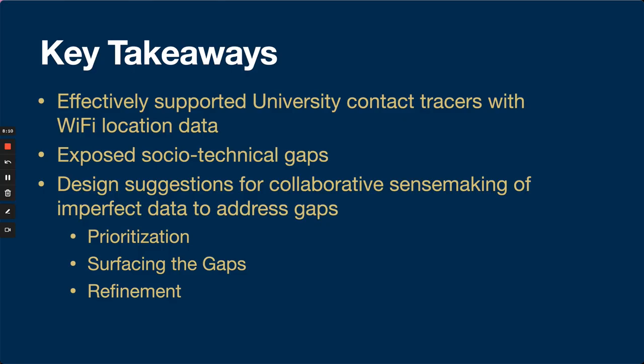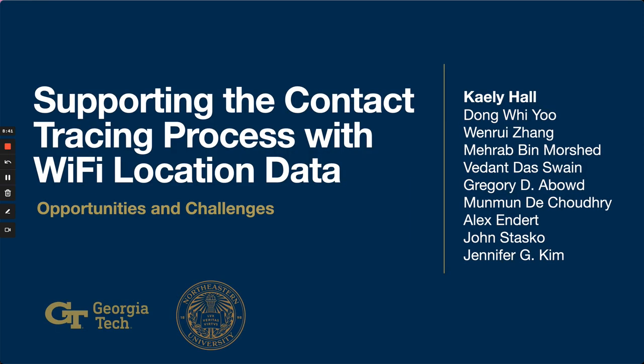Here are the key takeaways. We effectively supported university contact tracers and boosted their confidence by adding context to their process with Wi-Fi location data. However, in doing so, we exposed sociotechnical gaps within the system in the form of data inconsistencies causing false positive and false negative events. To address this, we suggest design techniques intended to reduce cognitive load and help users collaboratively make sense of imperfect data, supporting their decision-making process. This concludes the presentation of my paper. Thank you so much for watching.